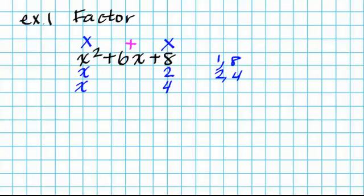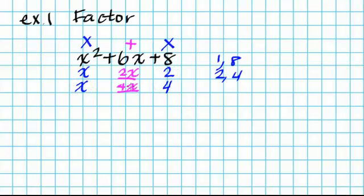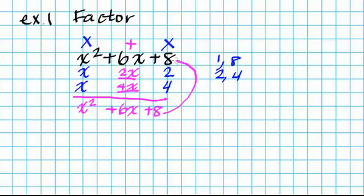So I multiply x times 2, which gives me 2x, and x times 4, which gives me 4x. If I check this: x times x gives me x squared, 2x plus 4x gives me positive 6x, and 2 times 4 gives me positive 8, which is what I started with. So I did factor correctly.